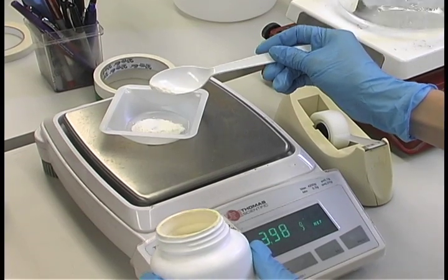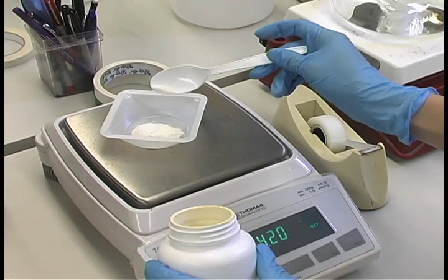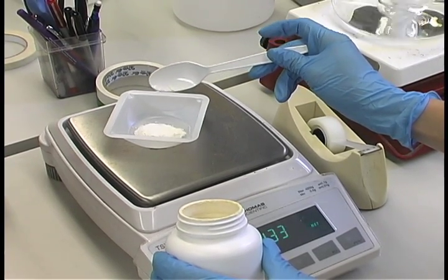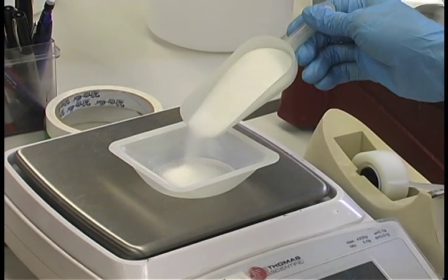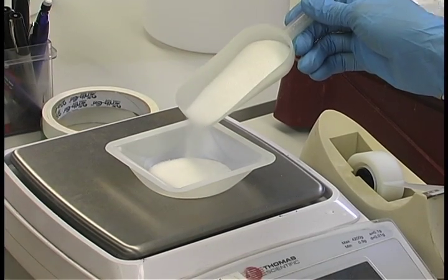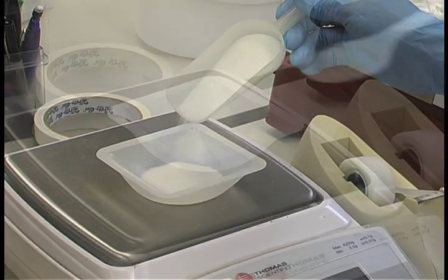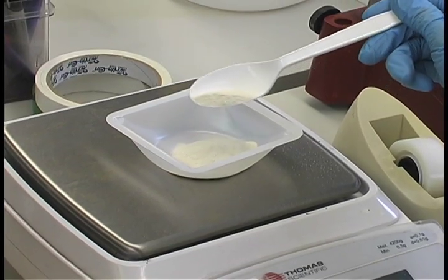Always use either a weigh boat or weighing paper when weighing out chemicals to protect your balance. Repeat the procedure with all other dry chemical items that are going to be included in the medium. This includes carbohydrates, gelling agents, or other components.